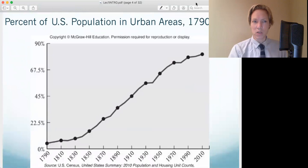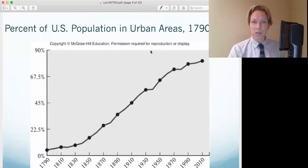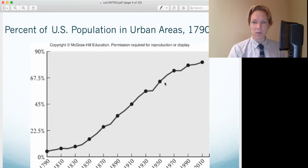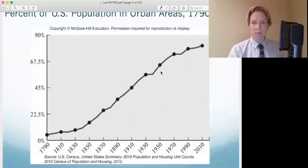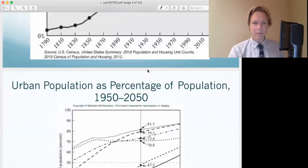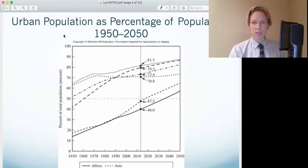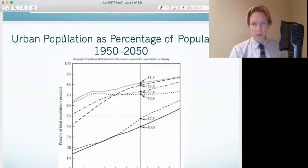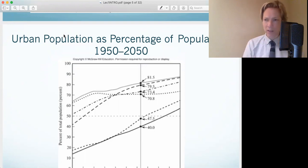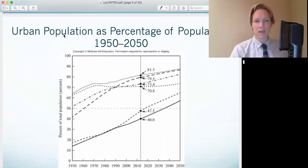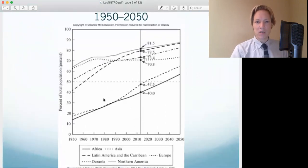And furthermore, this trend is just increasing. So this is the percent of the U.S. population that lives in urban areas. And you can see that it's just going up and up and up. And then this is the urban population as a percentage of the population. What percentage of the population lives in urban area? And again, you can see these trends going upwards. North America would be this one, and this is just predicted to grow and grow and grow.